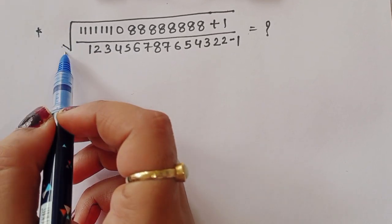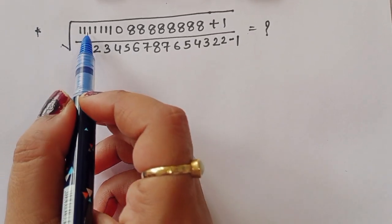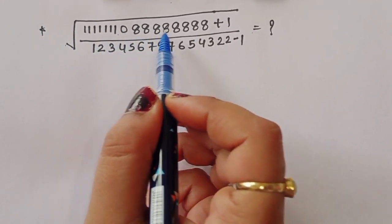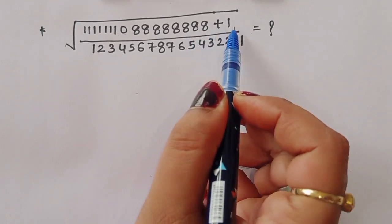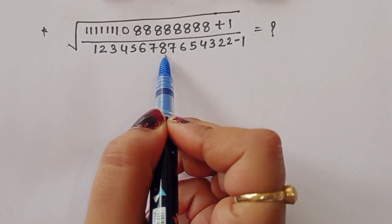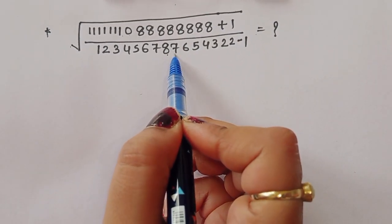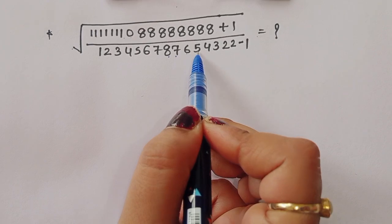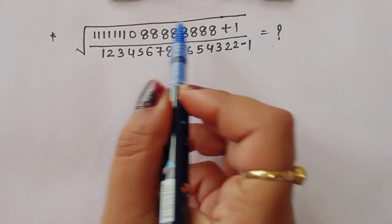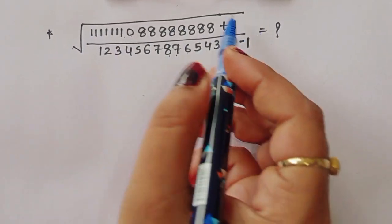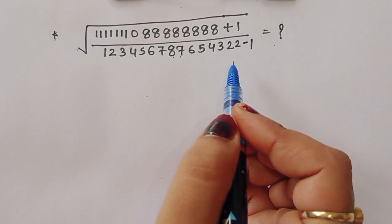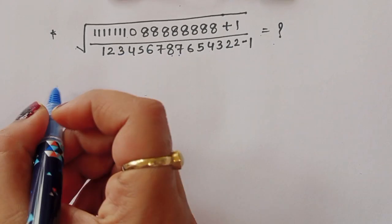The question is: given square root of 7 times 10^8 times 8 plus 1, divided by 12345678765432 minus 1, what is the value? We have to find out the value of this expression. Let's see the solution.